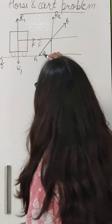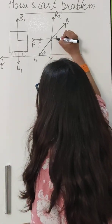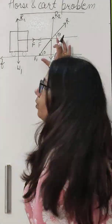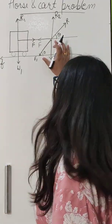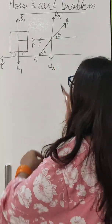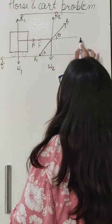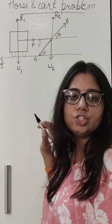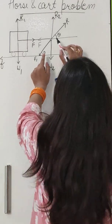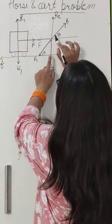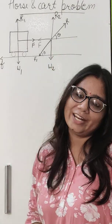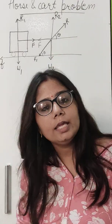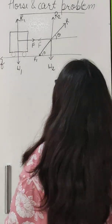If this angle is theta, this angle will also be theta. These two are parallel lines and this is a transversal, so these two are corresponding angles, and corresponding angles are always equal to each other.